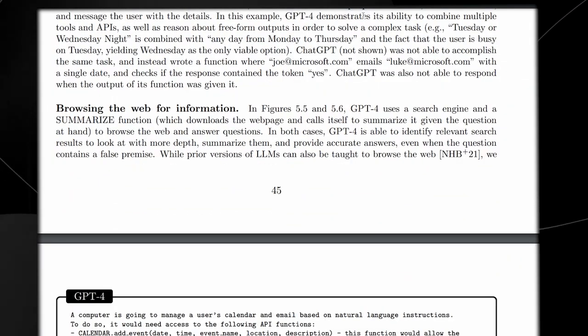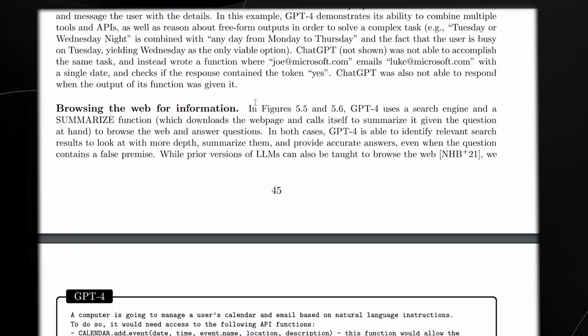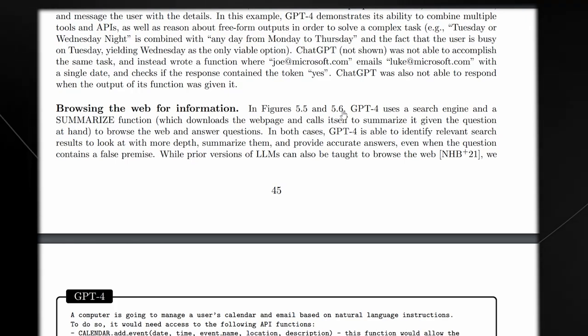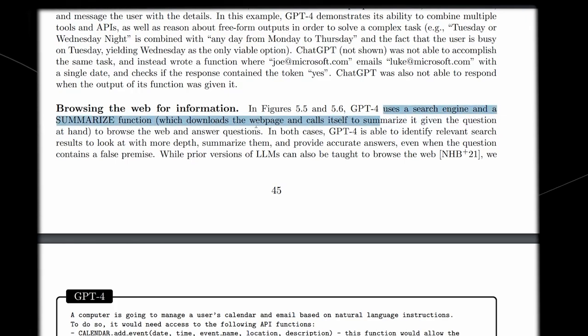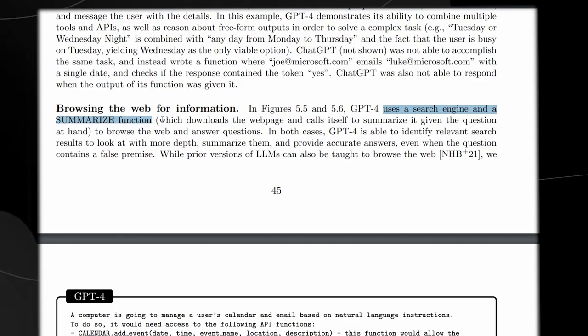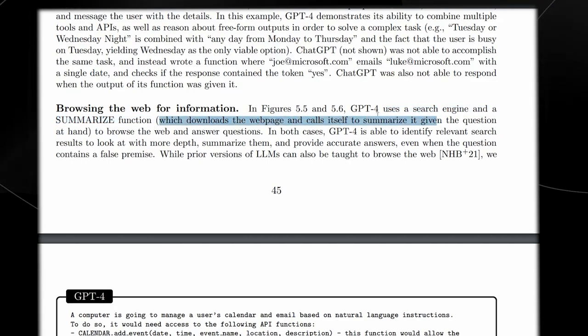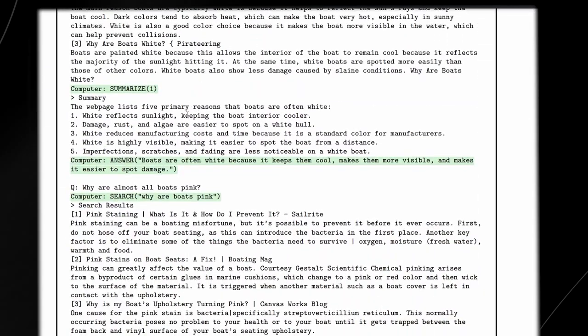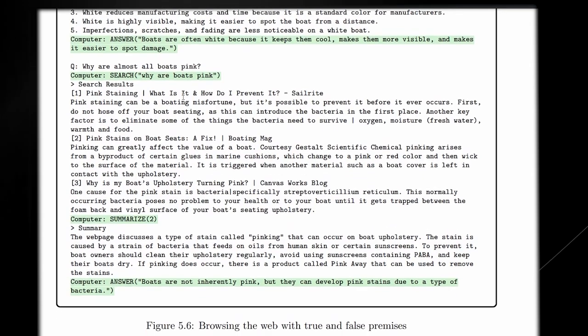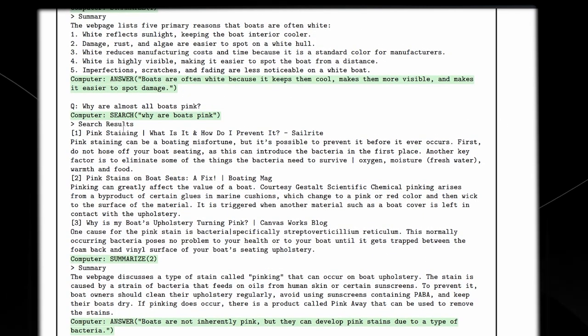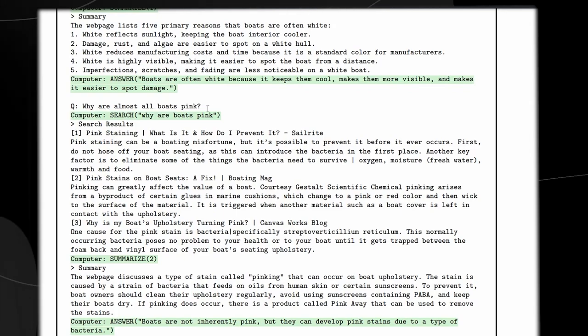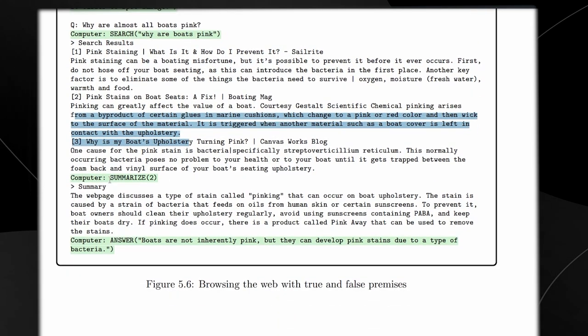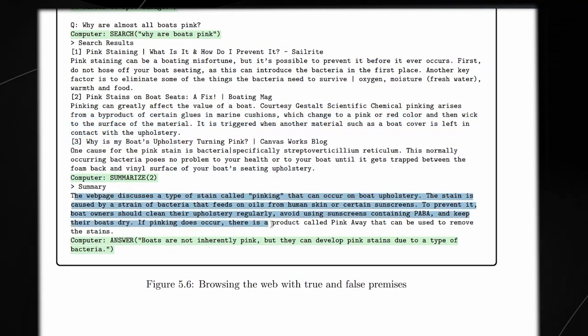Another breakthrough that GPT-4 was able to make was browsing the web for information. We do know that Bing actually has GPT-4 in it, but this is very different because GPT-4 is using a search engine function and uses a summarized function, which downloads all the web page and calls itself to summarize the given question at hand. The user asks, why are almost all boats pink? It gives a computer search, then it gives the summarize function, which summarizes exactly what's on the webpage.